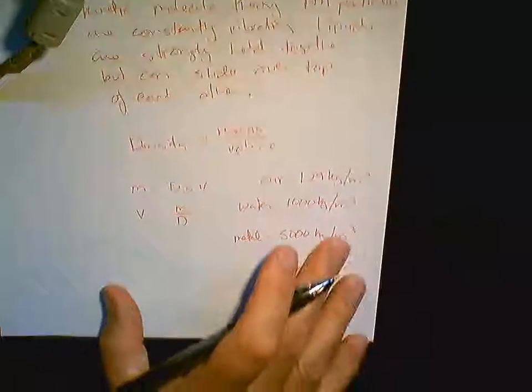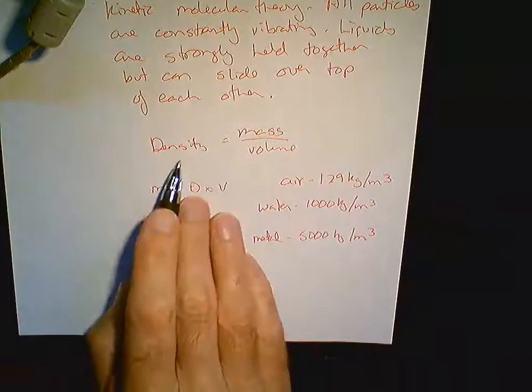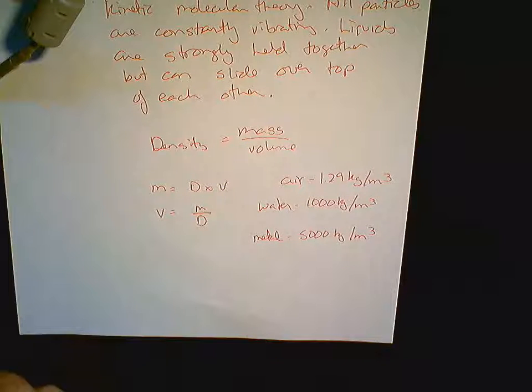Now, there is one calculation you have to be able to do in U5A1. Back to grade 9, a little bit of review of density. Density is mass over volume. So, for example, if we're looking at density,